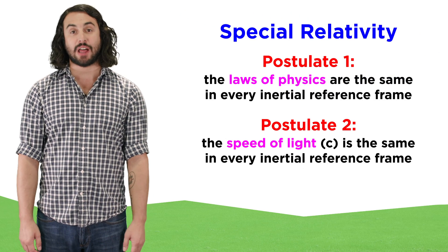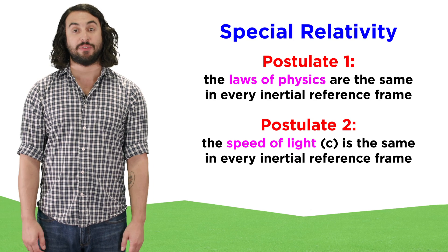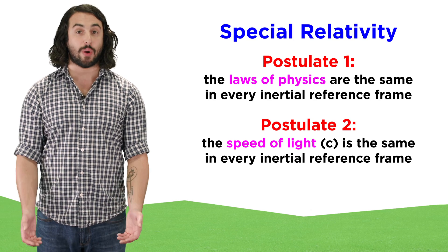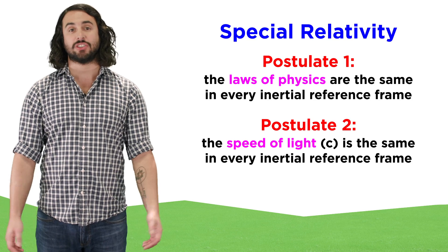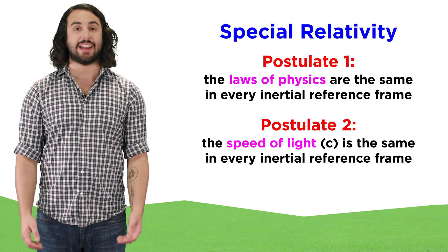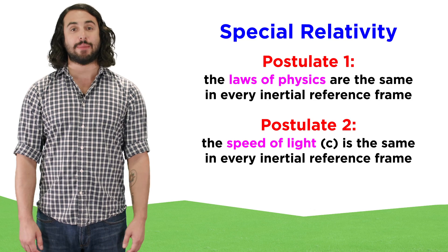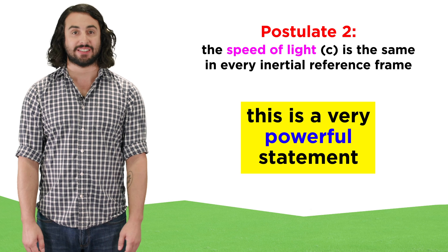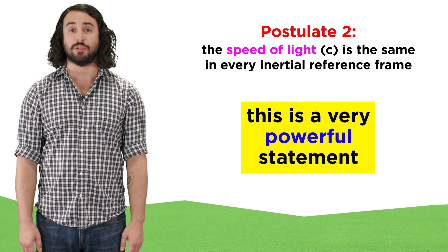But the speed of light, represented by the letter c, is a law of physics. It is a constant that is used in numerous equations. So the second postulate states that the speed of light in a vacuum will be the same in every inertial reference frame. Before we brush this statement aside, let's understand how incredible it is.